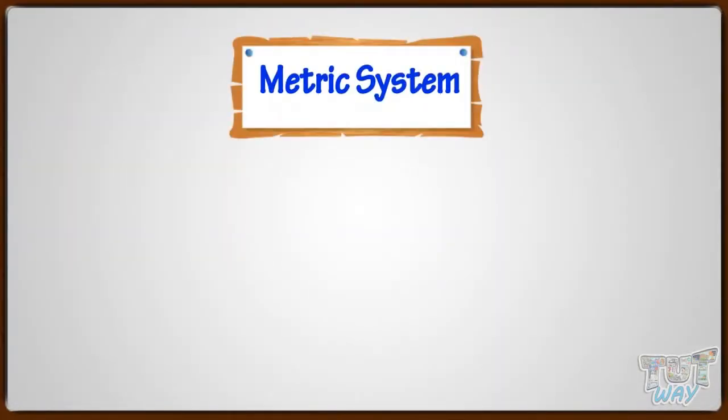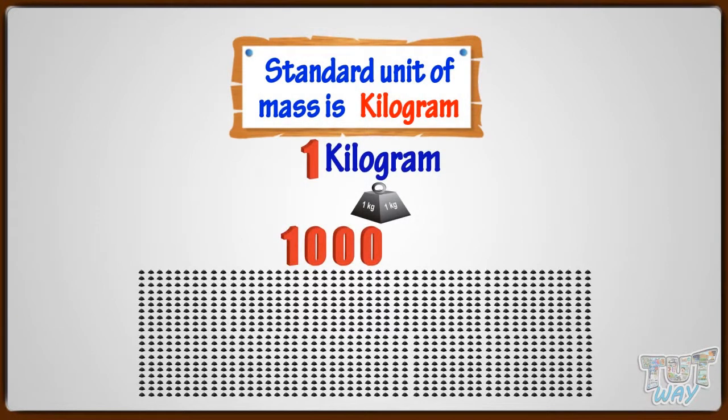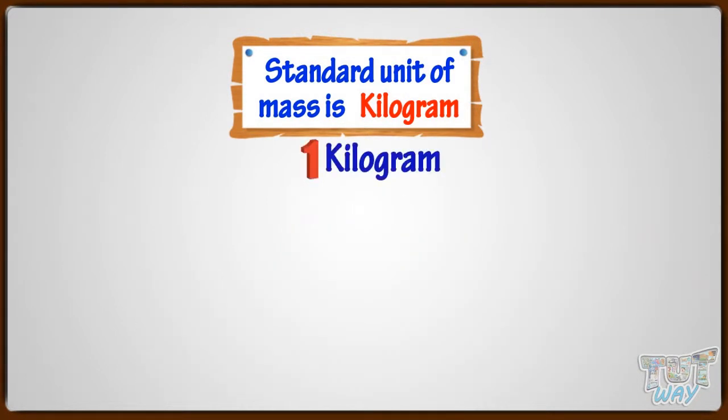In metric system, the standard unit of mass is kilogram. A kilogram is divided into 1000 equal parts called grams. One kilogram is written as kg and one gram is written as g.